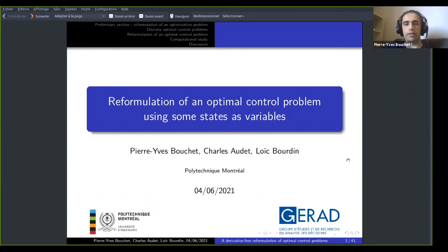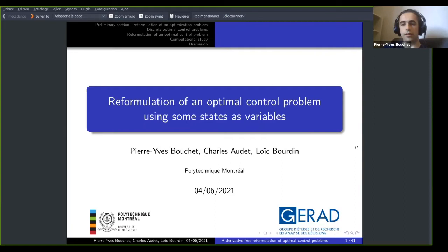Hi everyone, thank you for being interested in my talk today. I'm going to talk about an optimal control problem, and more precisely a reformulation of an optimal control problem using some states or variables. This is work performed by me with Charlotte and Rick Bourdin, a professor in black-box optimization at Polytechnique Montréal, and Gérard in optimal control at the University of Limoges in France. This work is at the intersection of these two fields.